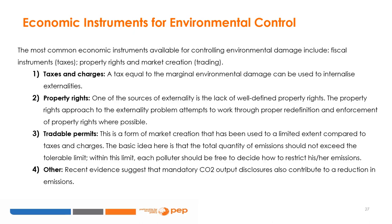The Coase Theorem: the fundamental theorem in the area of externality and property rights was developed by Robert Coase. The theorem states that under ideal economic conditions, where there is costless bargaining between the generator and the victim of an externality, the optimum outcome will emerge so long as either party holds the pertinent property right. It does not matter which one. Pareto efficiency will occur.